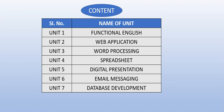The first unit is Functional English. Second is Web Applications. Third is Word Processing, i.e. MS Word. Fourth is Spreadsheet, i.e. MS Excel. Fifth is Digital Presentation, i.e. MS PowerPoint. Sixth is Email Messaging. And the seventh is Database Development, i.e. MS Access.